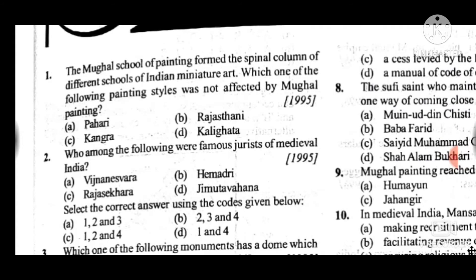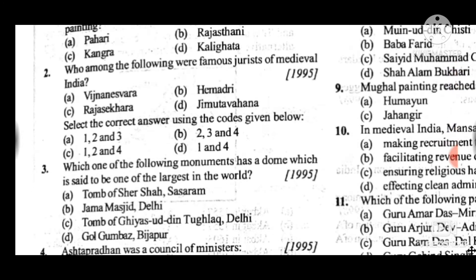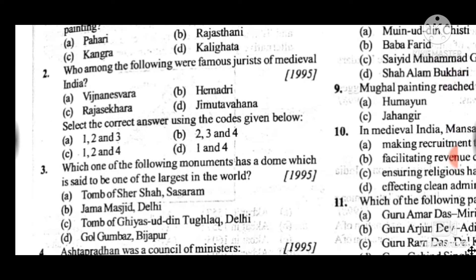Question 2: Who among the following were famous jurists of medieval India? Answer to question 2 is C: 1, 2 and 4. Vijayaneswara, Himadri, and Jimutavahana were the famous medieval Indian jurists. Question 3: Which one of the following monuments has a dome which is said to be one of the largest in the world? Answer to question 3 is D: Gol Gumbaz, Bijapur.